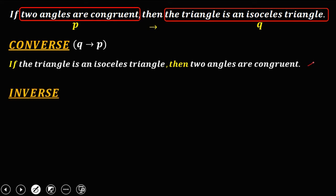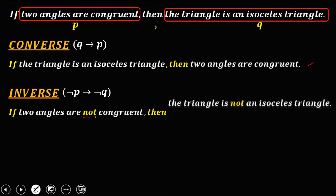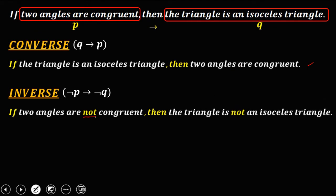For the inverse, that's not P implies not Q. So the statement now: if two angles are not congruent, then the triangle is not an isosceles triangle. So this is the inverse.